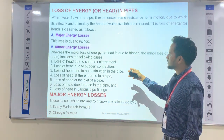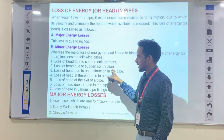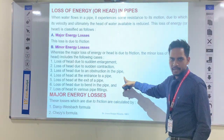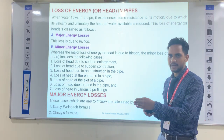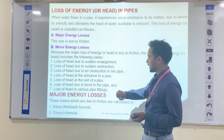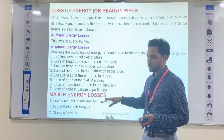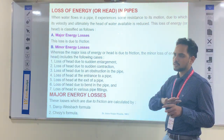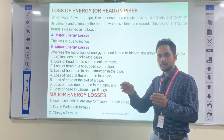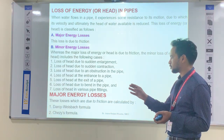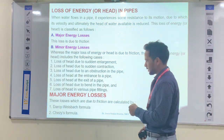The minor energy losses are: first, loss of head due to sudden enlargement; second, loss due to sudden contraction; third, loss of head due to an obstruction in the pipe; fourth, loss due to the entrance of the pipe; fifth, loss of head at the exit of the pipe; sixth, loss of head due to bends in the pipe — because not all pipes are straight, bends are needed due to site conditions; and seventh, loss of head in various pipe fittings.